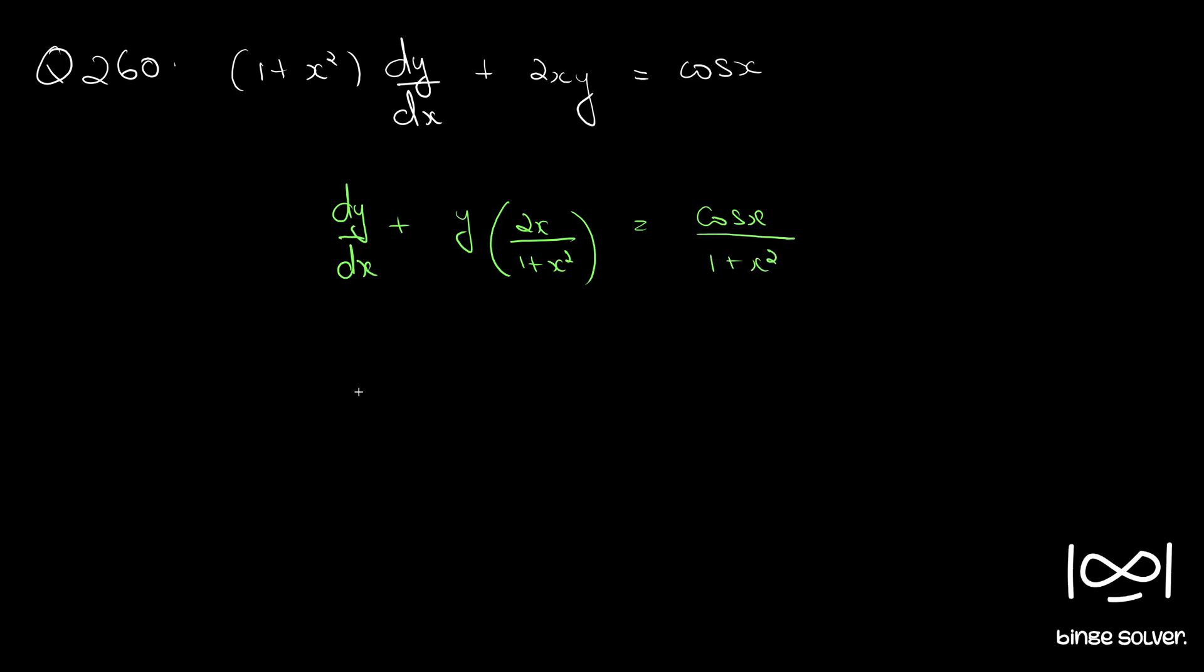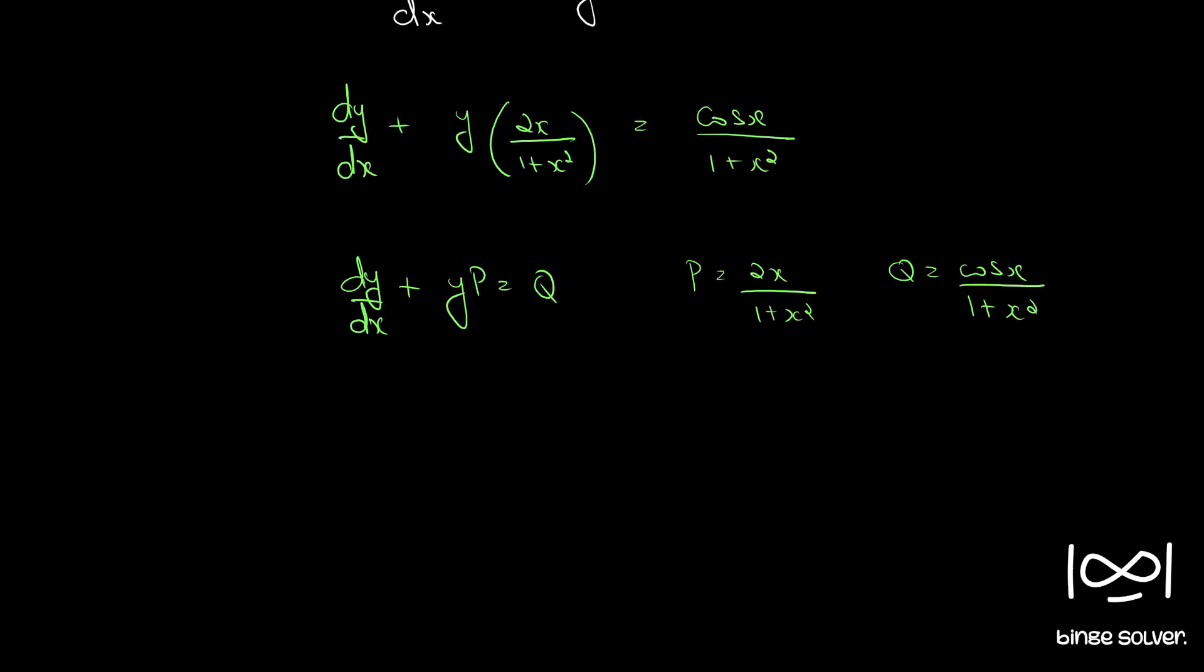So now this is in the standard form of a linear differential equation where p and q are functions of x alone or constants. Here p is 2x by 1 plus x square and q is cos x by 1 plus x square. Both are functions of x alone.